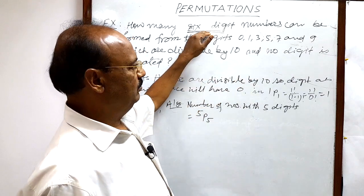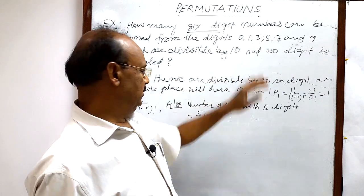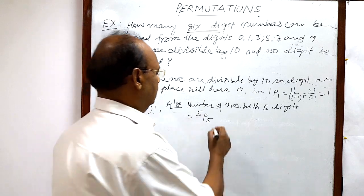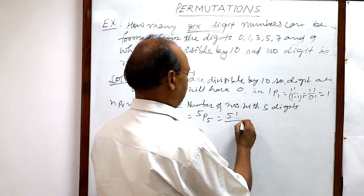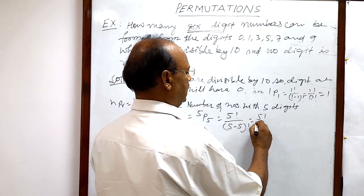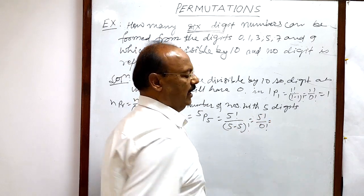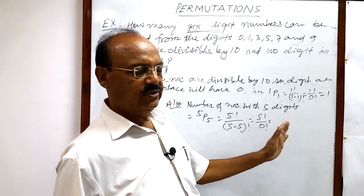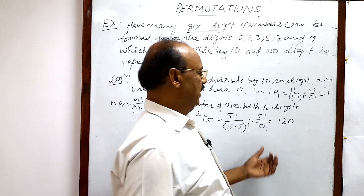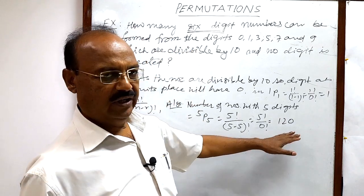This can be selected in how many ways? 5P5. This is equal to 5 factorial by 5 minus 5 factorial, means 5 factorial by 0 factorial. 5 factorial means 1 into 2 into 3 into 4 into 5, that will be equal to 120, and 0 factorial is 1.